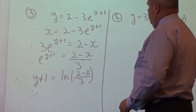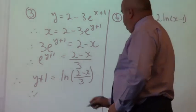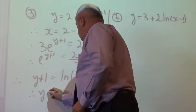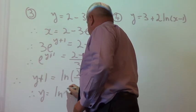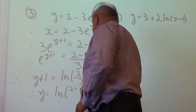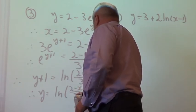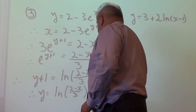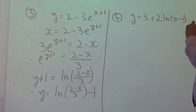And finally, you would take 1 from both sides. Therefore, y equals ln of 2 minus x over 3 minus 1. And we are done. Finally, one final example.